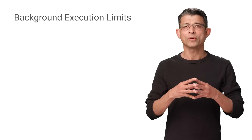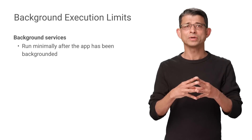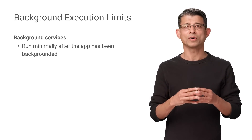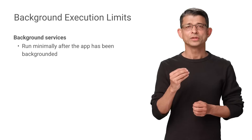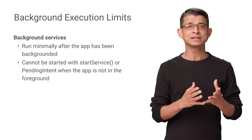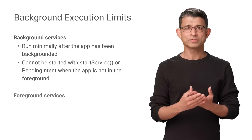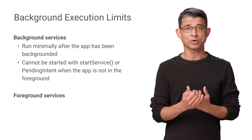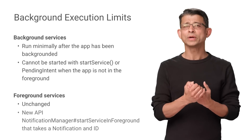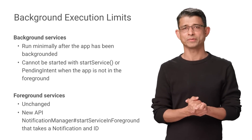On apps targeting Android O, background services now only run for a short time after the app no longer has visible activity or a foreground service. startService or a service pending intent will throw an illegal state exception when the app is not in the foreground. Foreground services that require a persistent notification work as usual, and there's a new API to start a foreground service directly: startForegroundService.